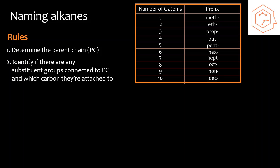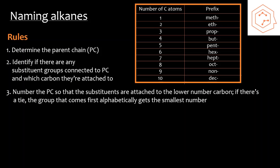Second, you're going to want to identify if there are any substituent groups connected to the parent chain and which carbon they're attached to. A substituent group is an atom other than hydrogen that is bonded to a carbon in the parent chain, and it does affect the molecule's properties. Third, we're going to want to number the parent chain so that the substituents are bonded to the carbon with the lowest number.